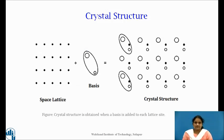Here, the figure shows the crystal formation. The basis must be identical in composition, arrangement and orientation such that the crystal appears exactly the same at one point as it does at the other equivalent point. Space lattice and basis together form the crystal structure.